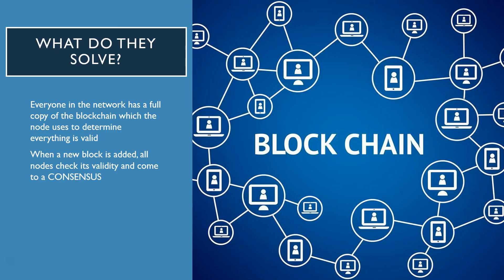If you're looking for a system where facts can be verified by anyone, where records can be stored safely and completely securely, then the blockchain is right for you. Everyone in a network has a full copy of the blockchain, which each node uses to determine what is valid. When a new block is added, all the nodes check its validity and come to what's called a consensus. If there is no consensus, there is no confirmation, and that transaction does not go through.